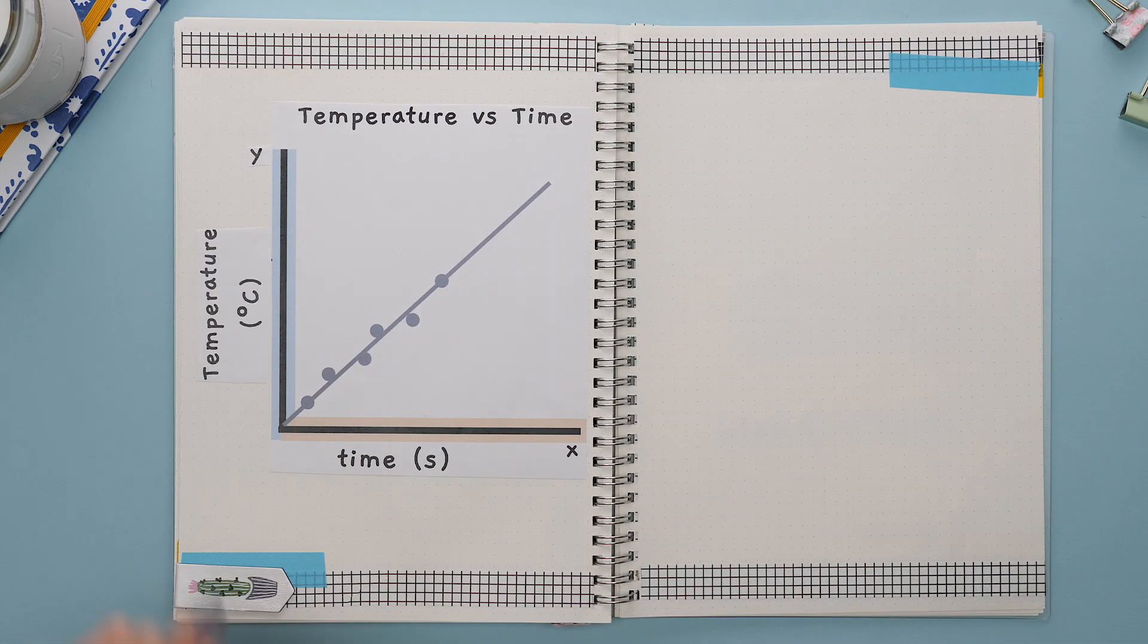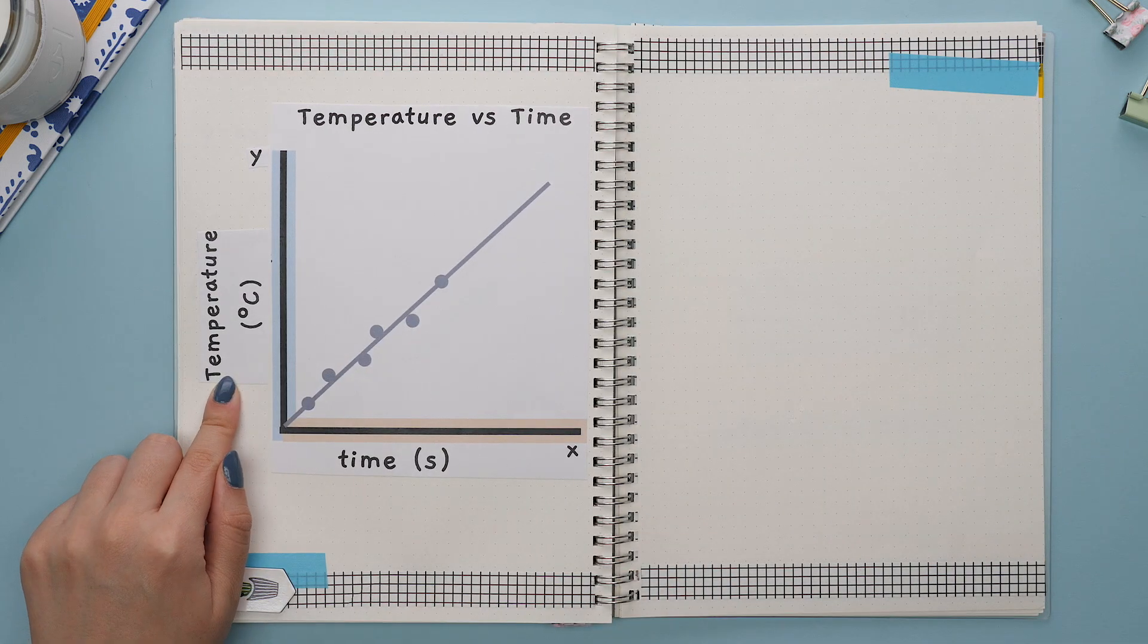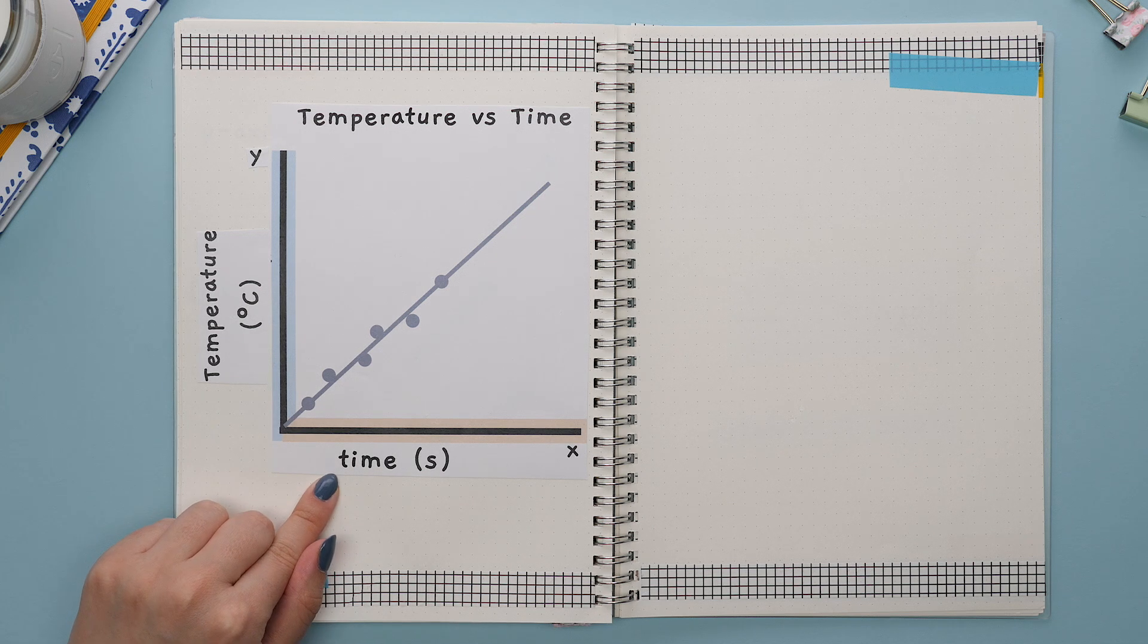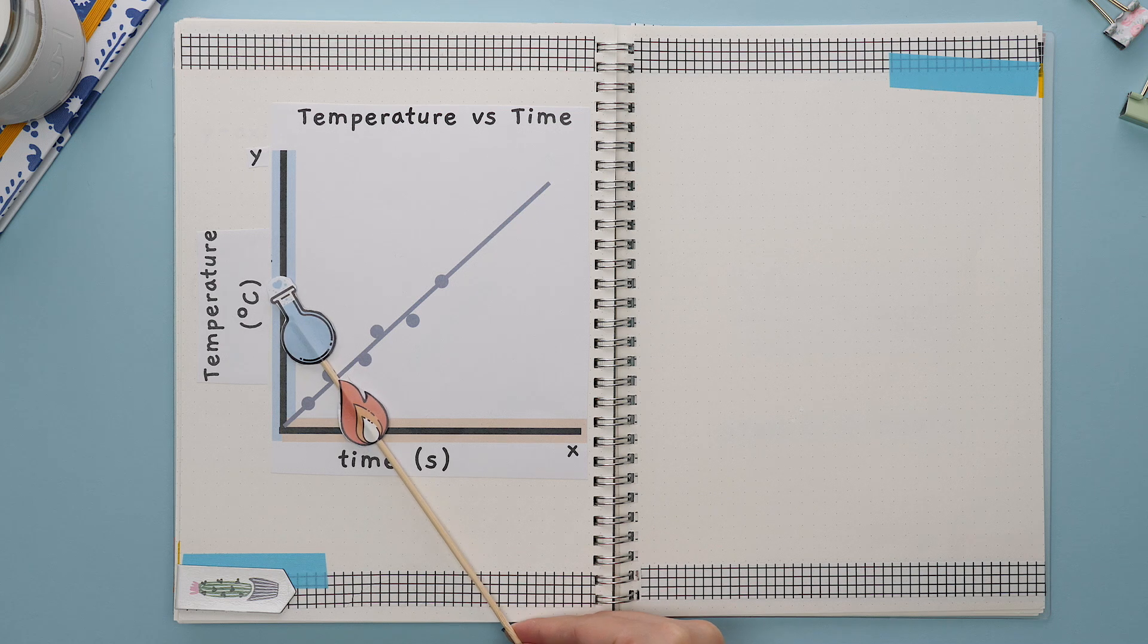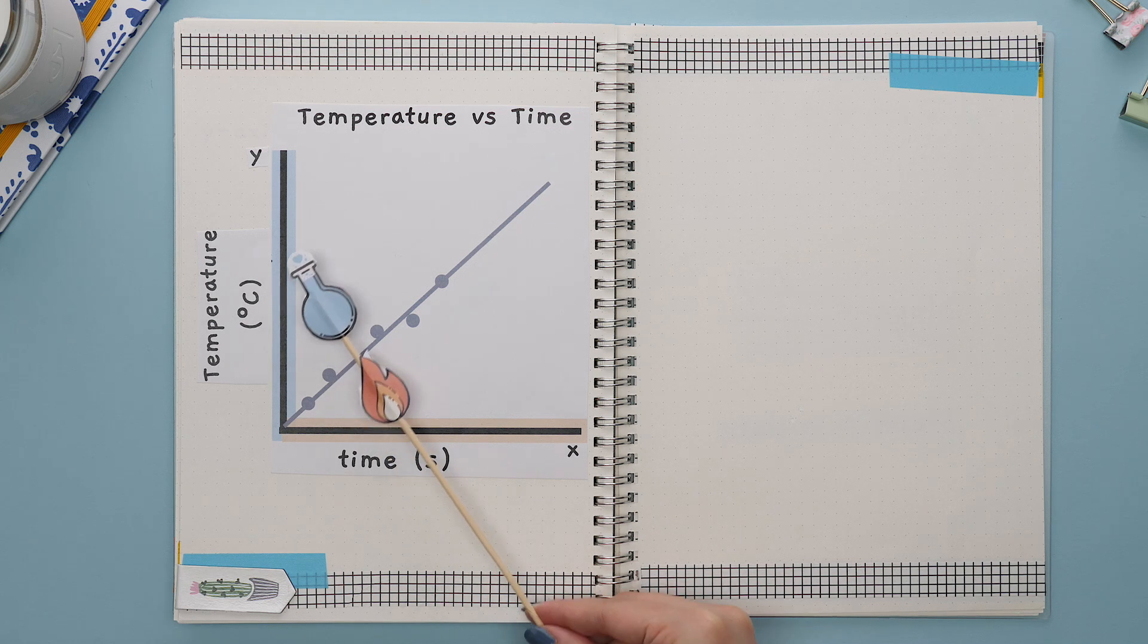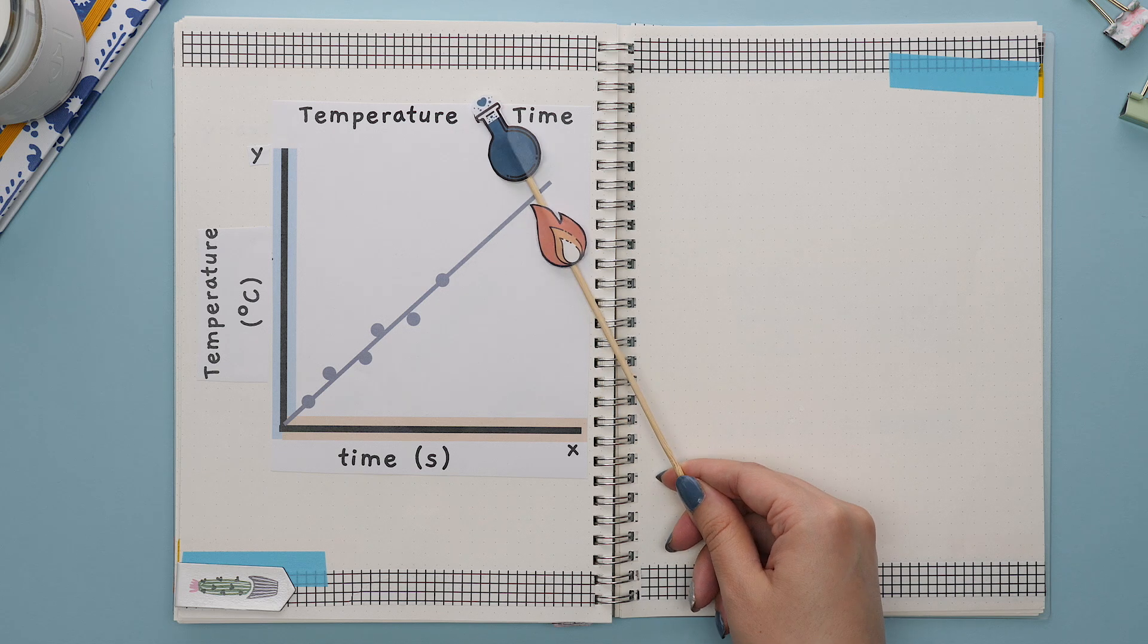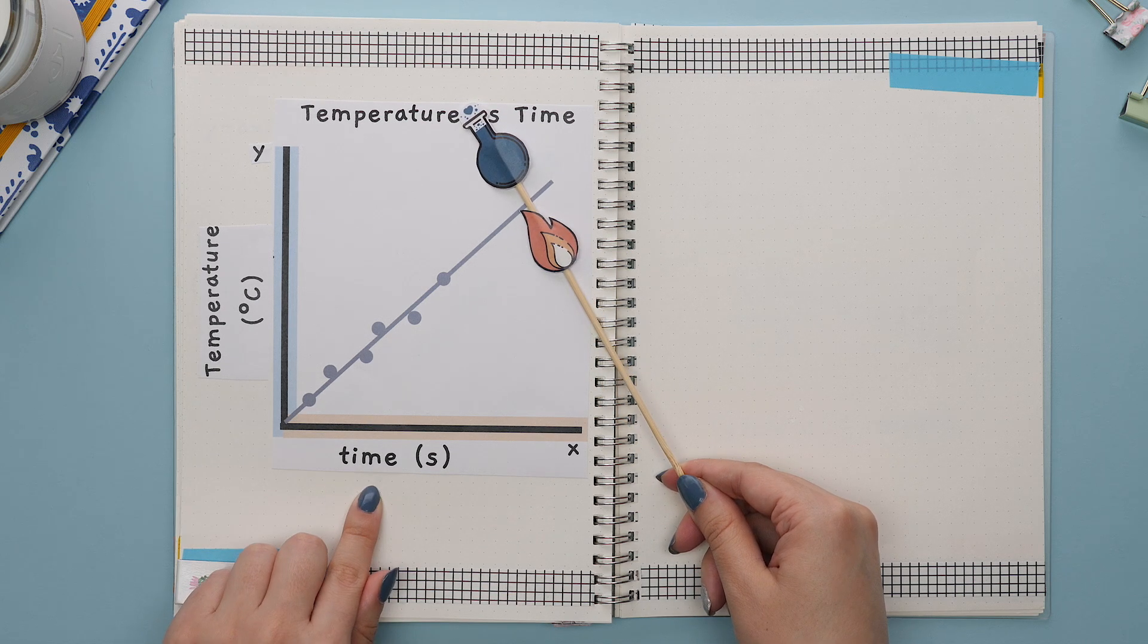For example, if we have temperature as our dependent variable and time as the independent variable, and we were boiling a substance, we are able to control how long we boil the substance, but the temperature is dependent on how much time we allow the substance to boil for.